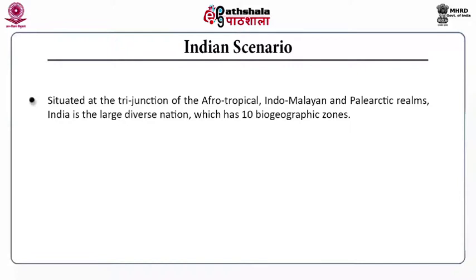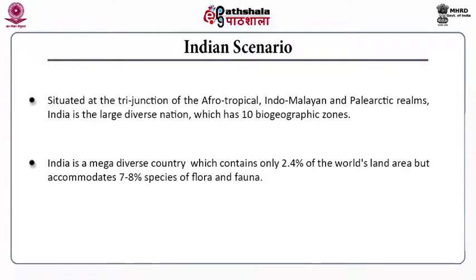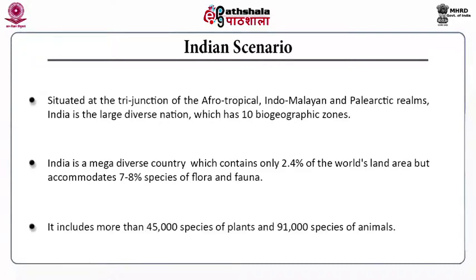We will now see the Indian scenario of biodiversity conservation. Biodiversity is situated in India at the tri-junction of the Afro-Tropical, Indo-Malayan and Paleo-Arctic realms. India is the largest biodiverse nation including 10 biogeographic zones. It is a megadiverse country. It includes 2.4% of world's land area but accommodates 7 to 8% species of flora and fauna — almost double or triple. It includes 45,000 species of plants and 91,000 species of animals.